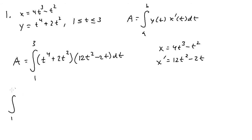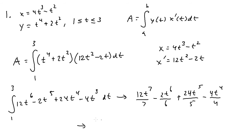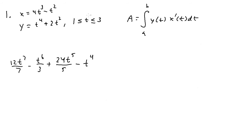After FOILing, we get the integral from 1 to 3 of 12t⁶ - 2t⁵ + 24t⁴ - 4t³. Integrating gives us 12t⁷/7 - 2t⁶/6 + 24t⁵/5 - 4t⁴/4. Simplifying: 2t⁶/6 reduces to t⁶/3, and 4t⁴/4 simplifies to t⁴. So we get 12t⁷/7 - t⁶/3 + 24t⁵/5 - t⁴, evaluated from t = 1 to t = 3.